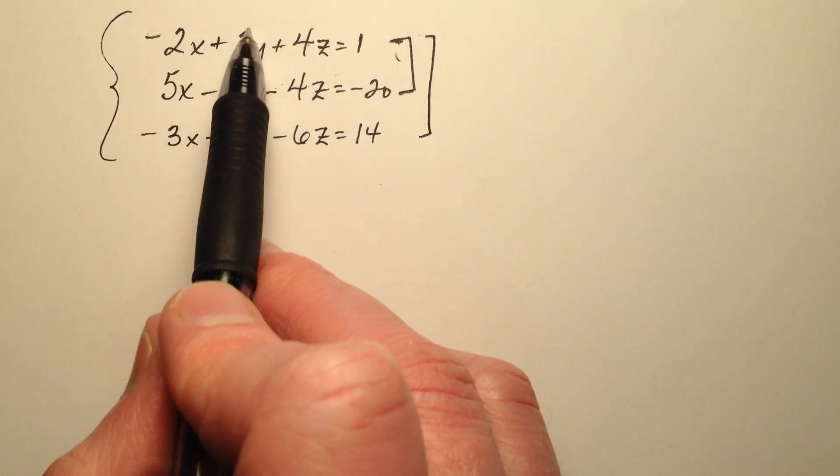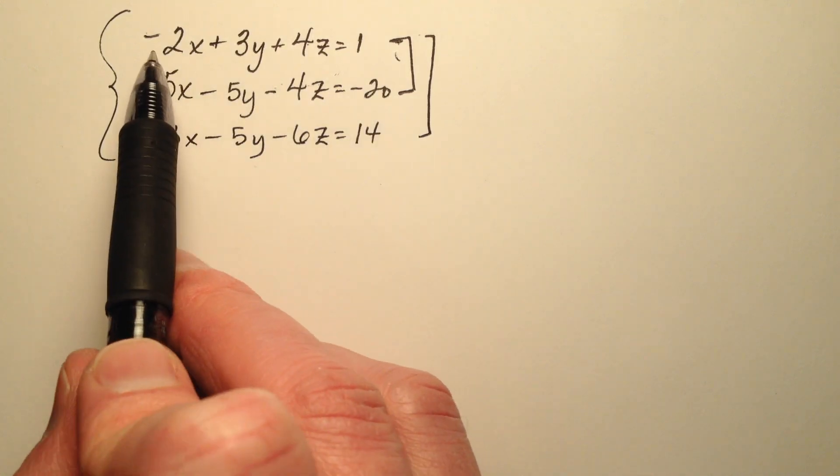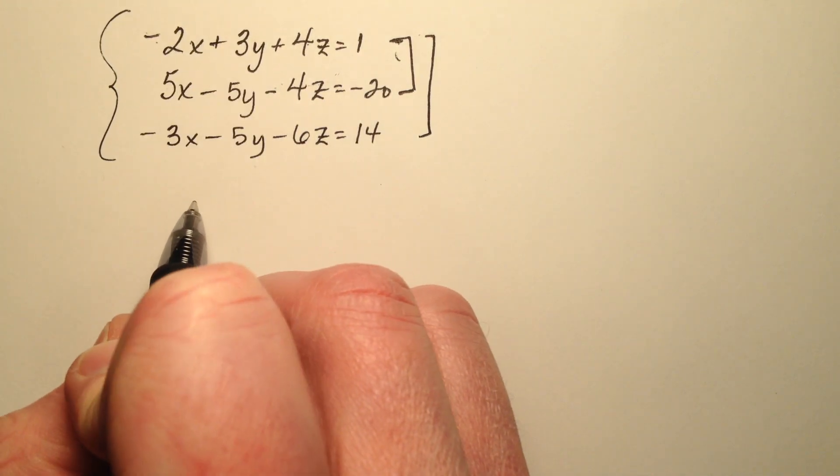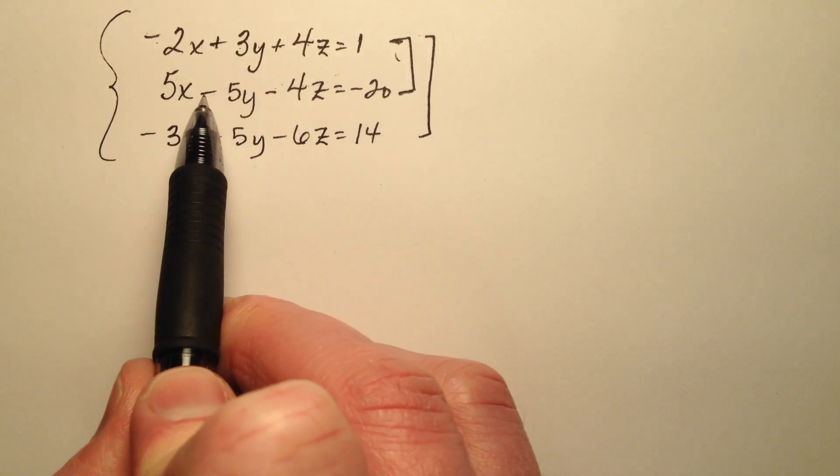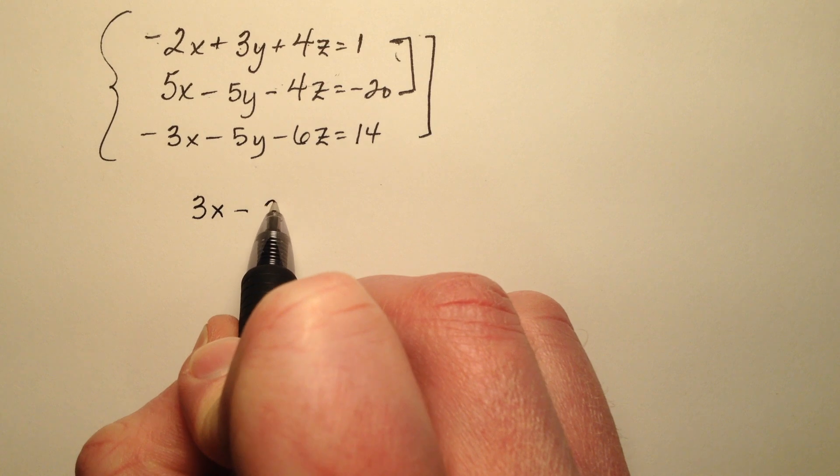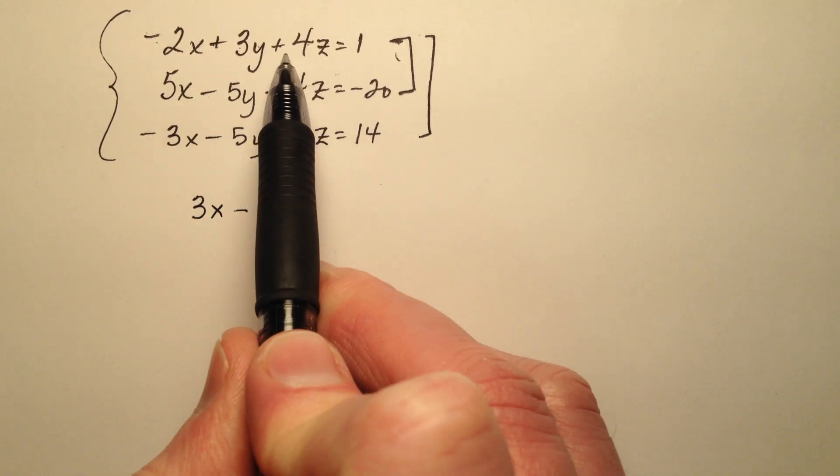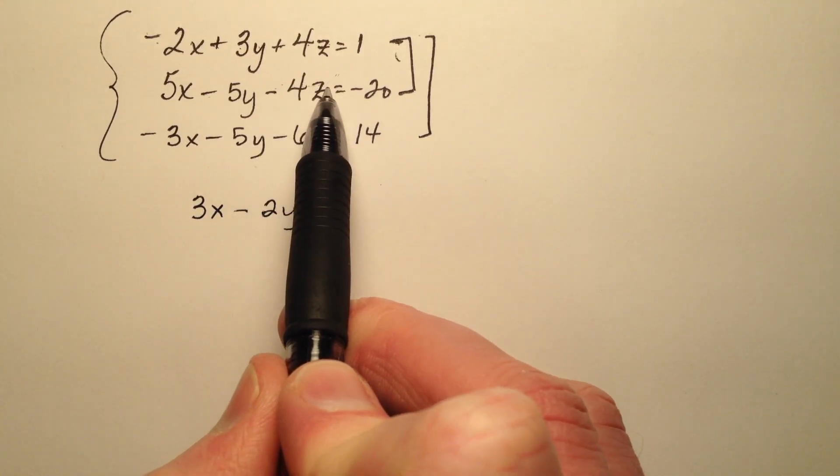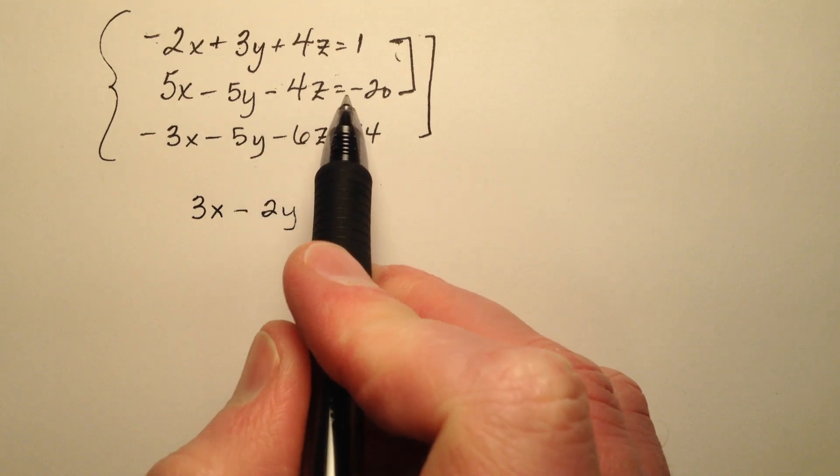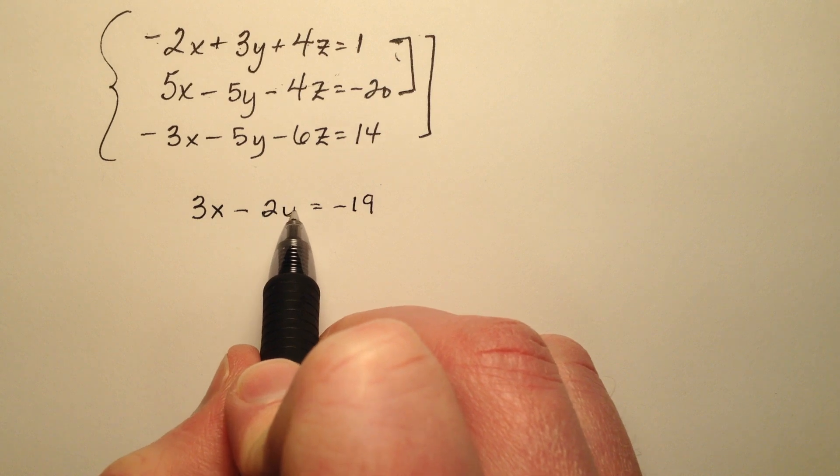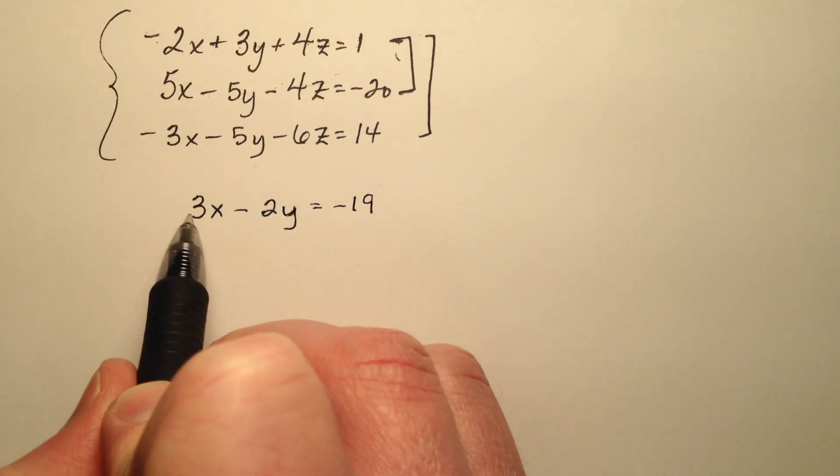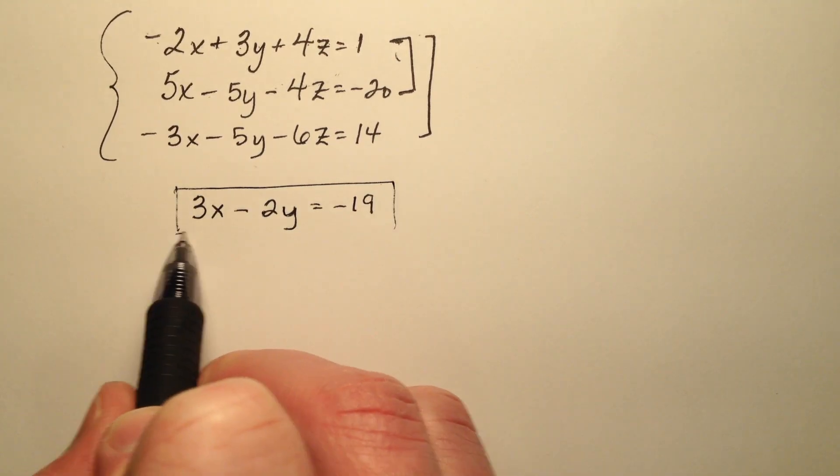So let's go ahead and see what that looks like. I'm just going to go ahead and straight up add these two equations. So negative 2x plus 5x makes 3x. And positive 3y minus 5y makes negative 2y. And then my positive 4z and negative 4z cancel each other out. So I'm left with just 1 minus 20, which is negative 19. So that's one of the equations that I can use.